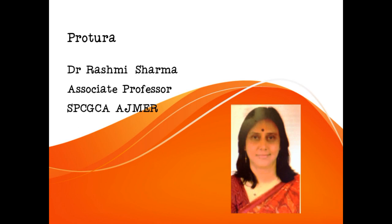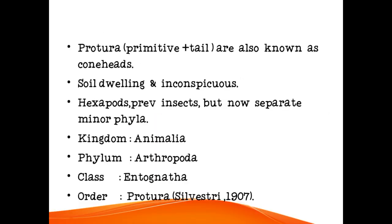Today we will take Protura. Protura means primitive tail animals. These are also known as cone heads because of their shape of head. These are soil dwelling animals and very inconspicuous. Hexapods — previously insects — but now they have separate minor phyla.